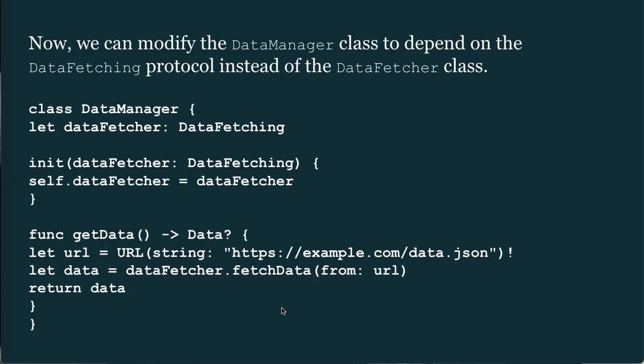Now we modify the DataManager class to depend on the DataFetching protocol instead of the DataFetcher class: class DataManager { let dataFetcher: DataFetching; init(dataFetcher: DataFetching) { self.dataFetcher = dataFetcher }; func getData() -> Data { let url = URL(string: ...); let data = dataFetcher.fetchData(from: url); return data } }.